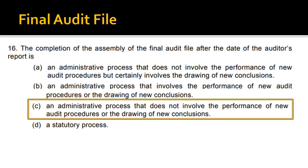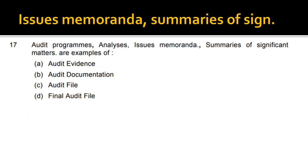Next: audit programs, analysis, issue memoranda, and summaries of significant matters are examples of what? They are examples of audit documentation. Audit documentation examples include audit programs, analysis, issues memoranda, and summaries of significant findings and matters.